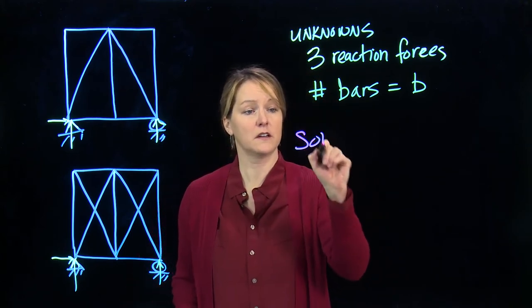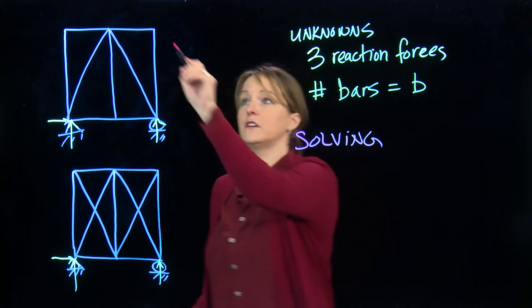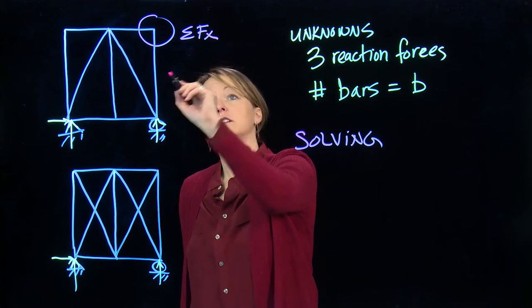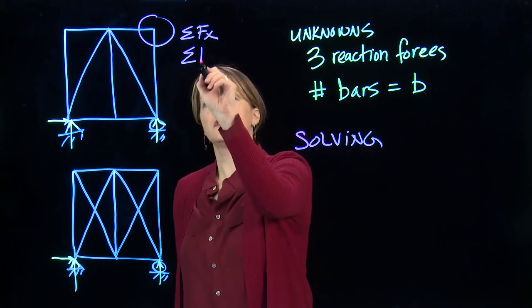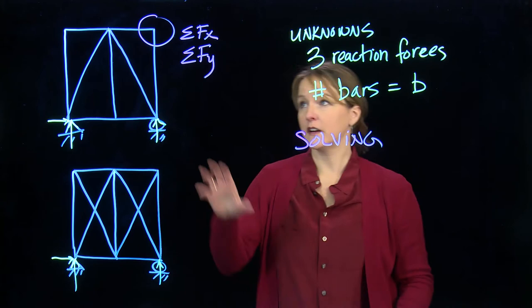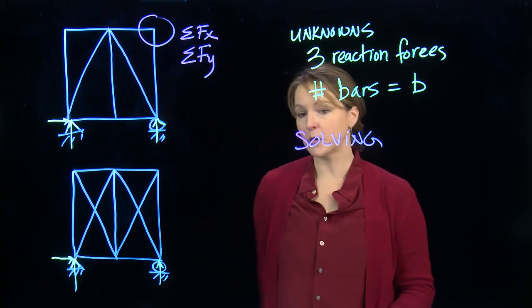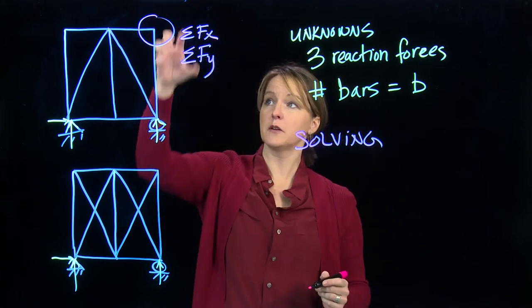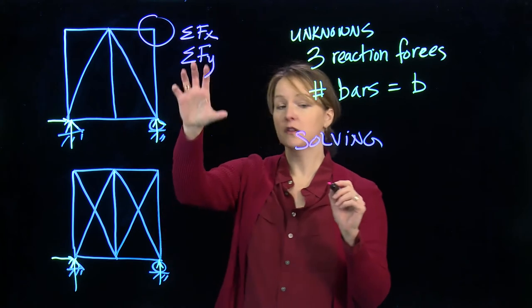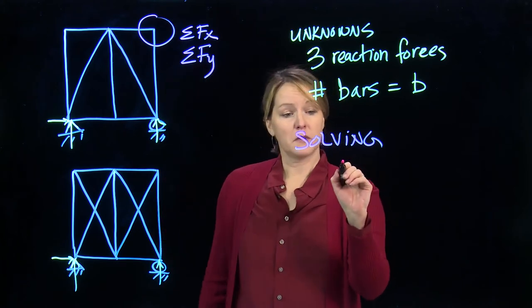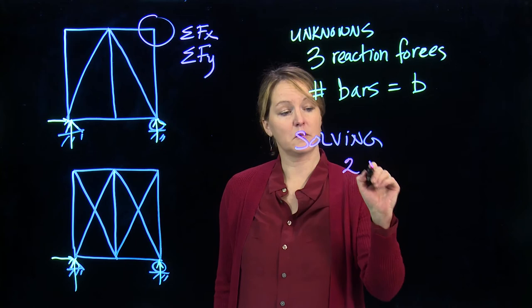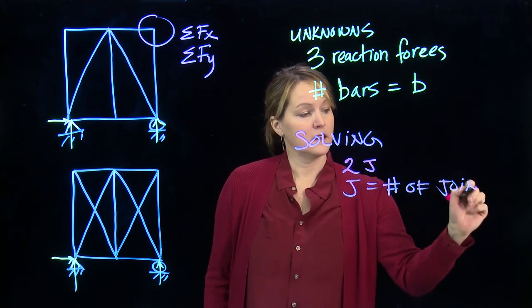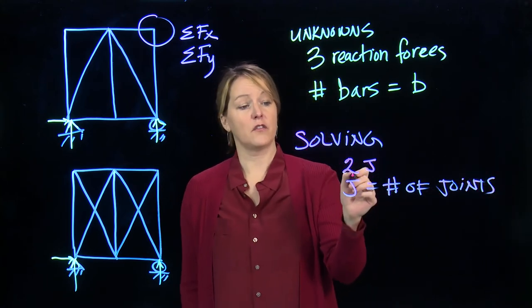So when I'm solving for all those forces, what I end up doing is I look joint by joint. I will sum forces in a two-dimensional truss, sum forces in two orthogonal directions, x and y, or along the axis and perpendicular. But at each joint, I'll have two options. So I'll take a free body diagram of just a joint. So when I'm solving, to be able to solve it, I'll have two times the number of joints. J equals the number of joints. That's how many equations I have that I can solve for it.